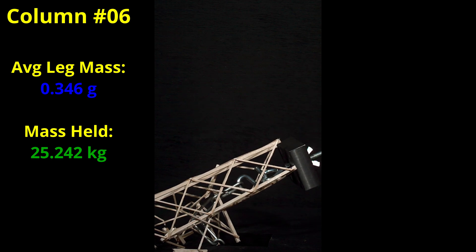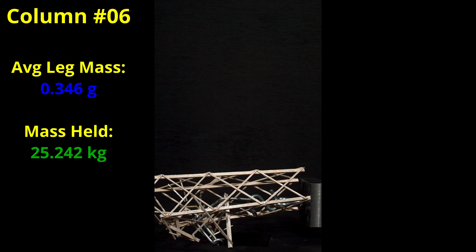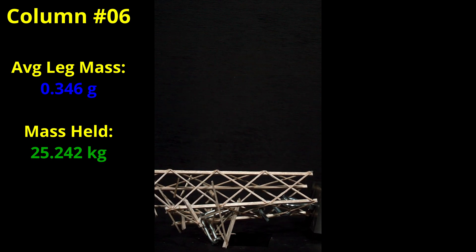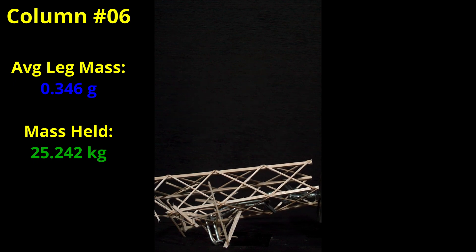It's obvious that the strength variation can happen in both directions and this set of legs happened to be on the strong side for their mass. I decided not to test the final two columns which had an average leg mass of 0.426 grams and 0.695 grams. These builds might have needed so much mass to break it, it could have damaged my loading bucket so I didn't want to risk it.